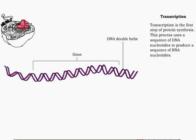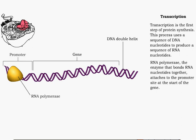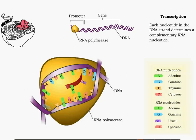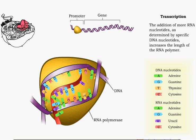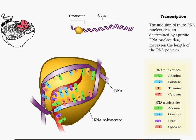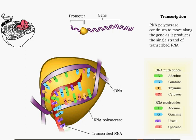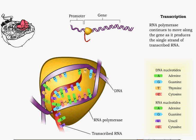Transcription, the first step of protein synthesis, results in the production of a sequence of RNA nucleotides. RNA polymerase is the enzyme that forms a sequence of RNA nucleotides. The exact nucleotide sequence of DNA in a gene determines the sequence of RNA nucleotides. RNA polymerase reads the DNA nucleotide to add an RNA nucleotide to the growing RNA strand, and continues to move along the gene as it produces the RNA strand.